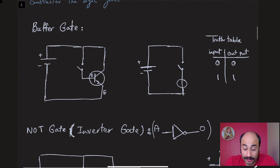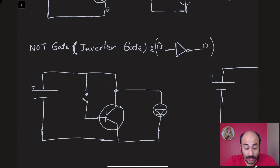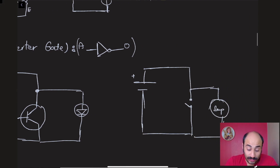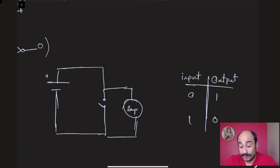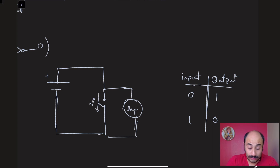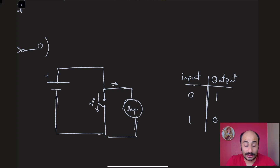The next gate is the NOT gate — in classical circuits it's called the inverter gate. You can see the schematic with the transistor on the left, but we're looking at it as a switch. What it does is invert the result. If the switch is open, no current flows that way, so that output is zero. The only current passing through lights up the lamp, so when input is zero the output is one.